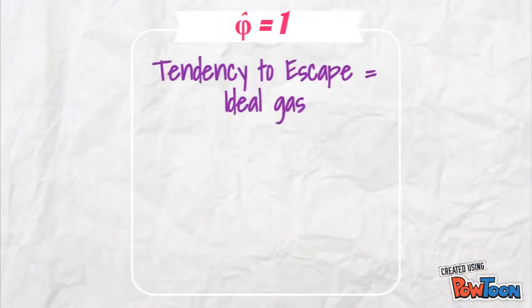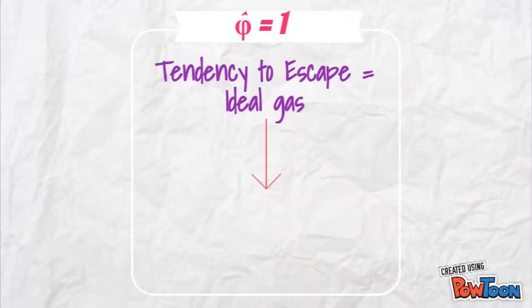When phi is equal to 1, the tendency to escape is the same as that of an ideal gas, and so the gas is ideal.